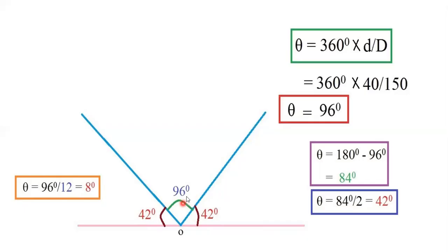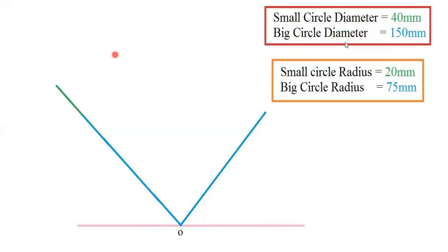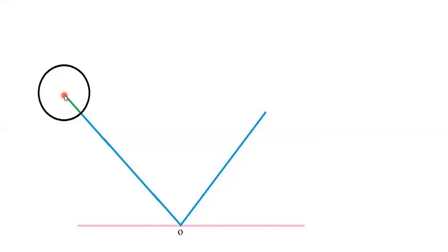The angle between those two lines will be 96 degrees. The smaller circle diameter is given as 40 mm, so the radius will be 20 mm. From point O, the distance to the big circle is 75 mm — the blue line is 75 mm. Above it, for the same angle, extend the line by 20 mm (the green line). Keep your point there — that is the center point. Take 20 mm in your compass and draw a circle.